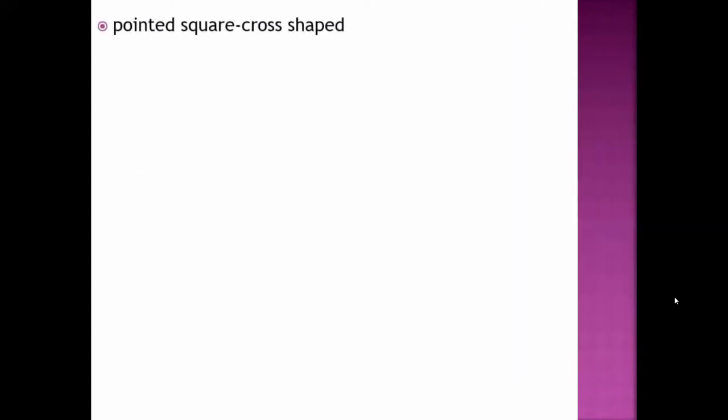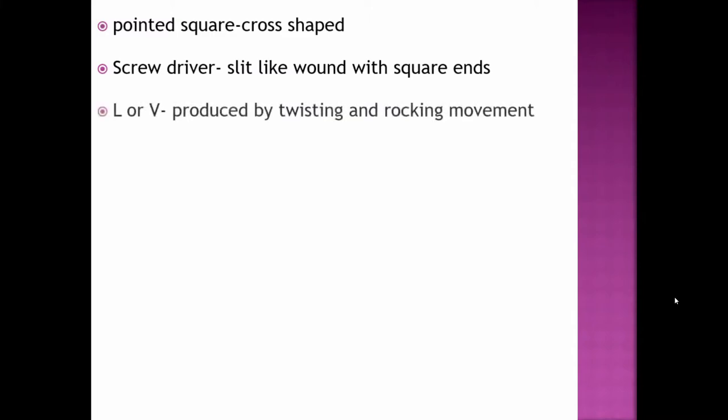Pointed square wound, cross-shaped wound is seen. Screwdriver wound is slit-like with square ends. L or V-shaped wound is produced by twisting and rocking movement of the weapon.